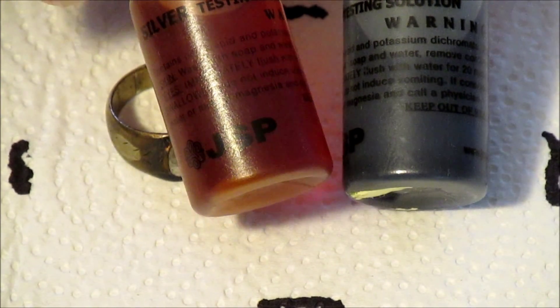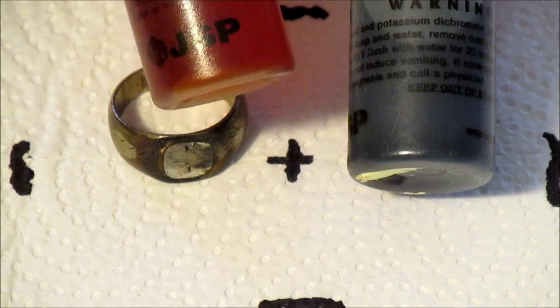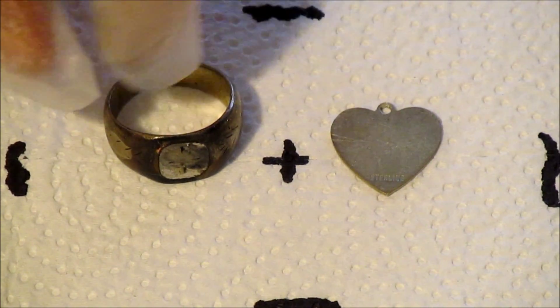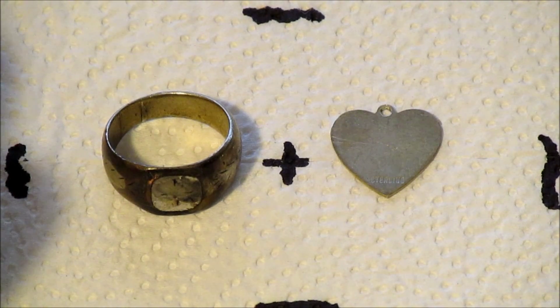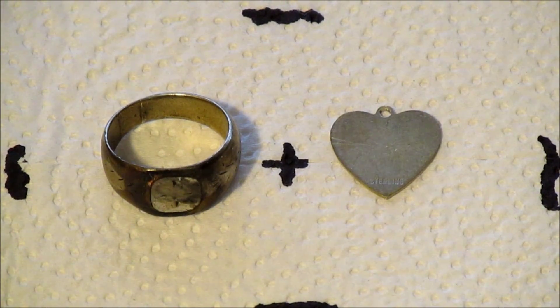I'll show you what the difference is in a second. So this charm here is marked sterling, which is 92.5 percent silver, and that's the most common silver used in jewelry.